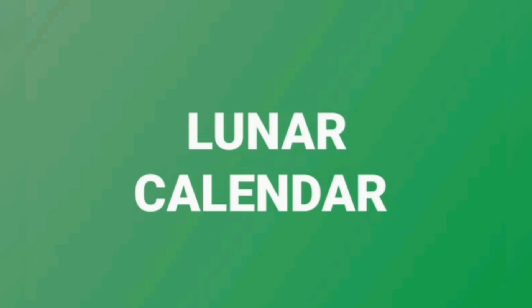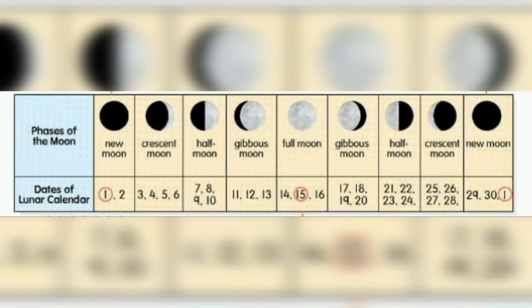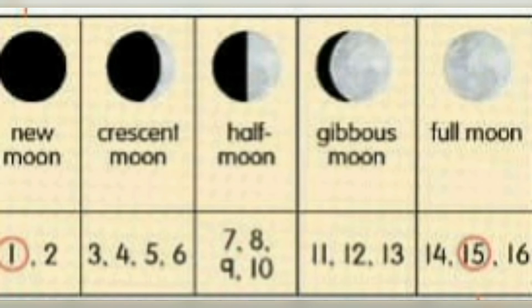The lunar calendar is also known as the Hijrah calendar. The dates of the lunar calendar are determined by the phases of the moon. Now, look at this diagram. As you can see, new moon is on day 2 of the lunar calendar.